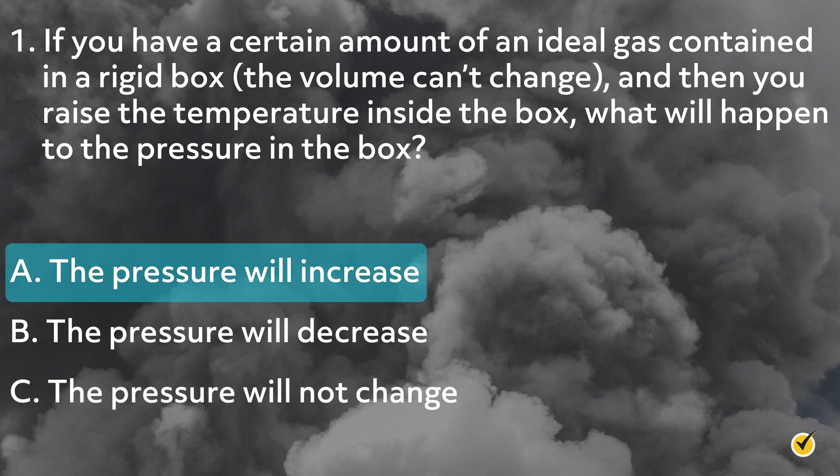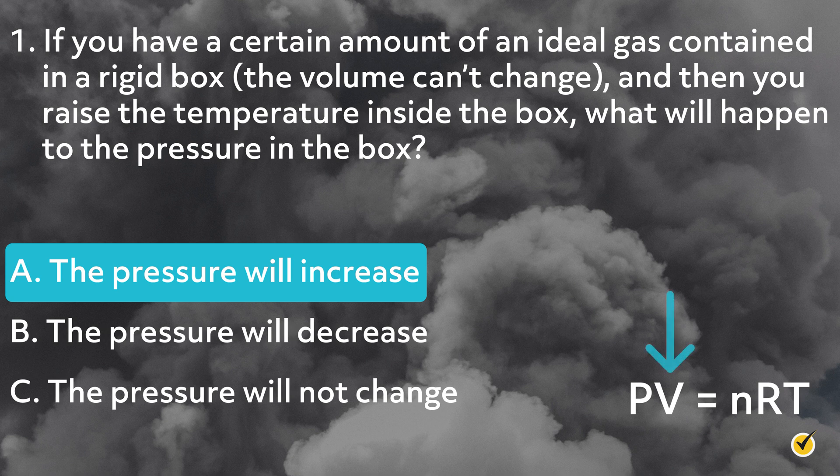The correct answer is A. If we look at the equation PV equals nRT, then we can see that when the volume and amount of gas are constant and the temperature is raised, then the pressure must also increase. If one side of the equation increases, the other side must also increase here. Note that temperature and pressure are dependent on each other.